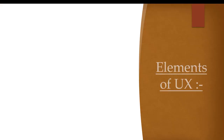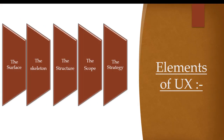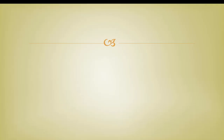The elements of UX — UX has basically five elements. The surface, where visual design is created. The skeleton, where interface design and information architecture is created. The structure, where we define the context of our design. In the scope, requirements and usefulness of design are included. And in the strategy, we define our business objectives and user's needs and goals.